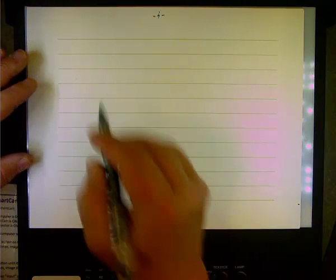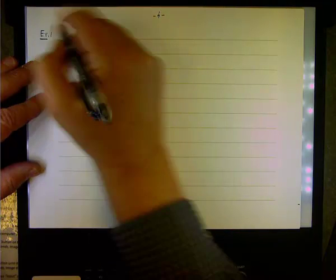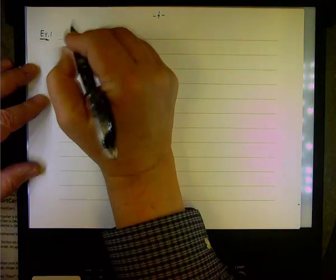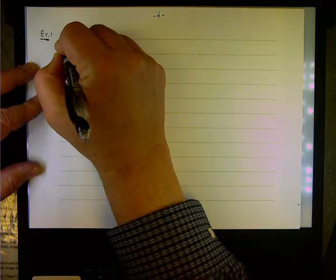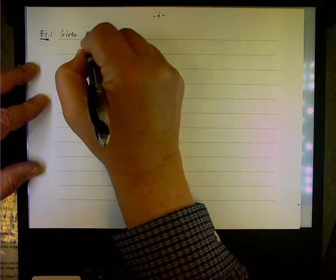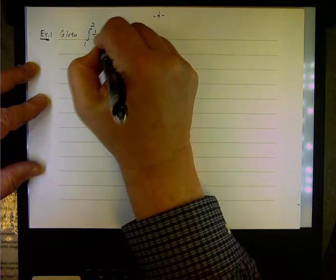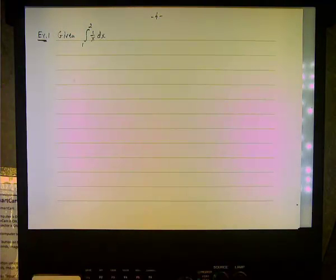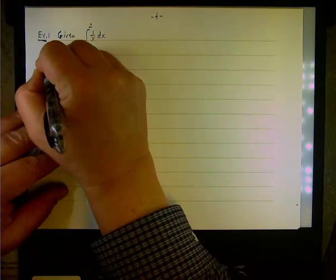So now we know two approximation techniques, midpoint and trapezoidal rule. In the first example, we're going to do the following. What's given to us is the definite integral from 1 to 2 of 1 over x dx. Here's what we're going to do.